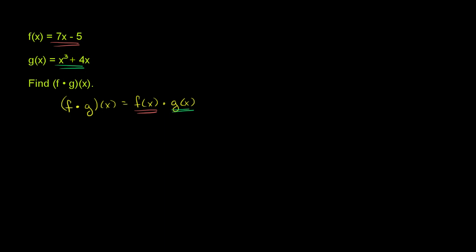So this is going to be equal to, switch back to the orange color, it's going to be equal to f of x, which is 7x minus 5, times g of x. And g of x is x to the third power plus 4x.